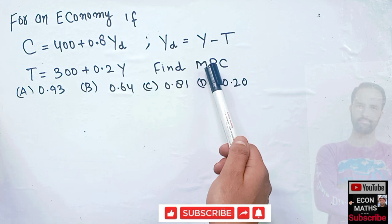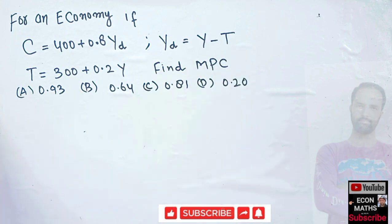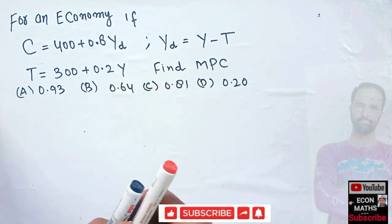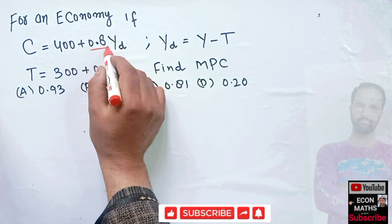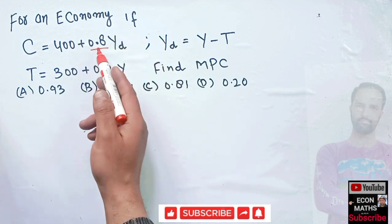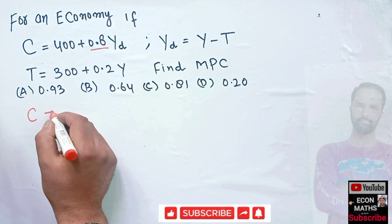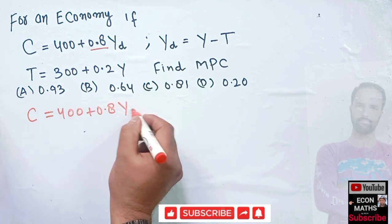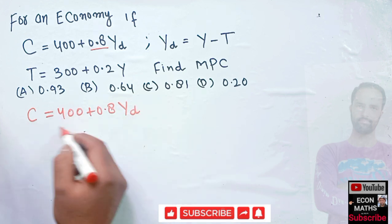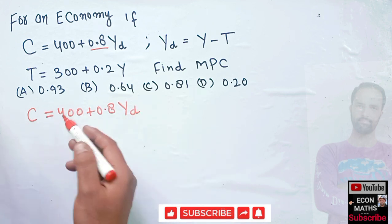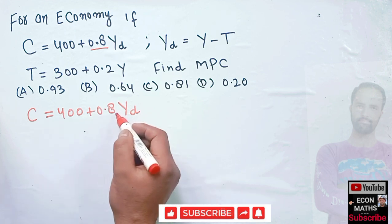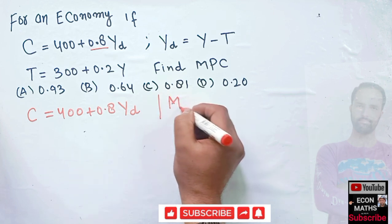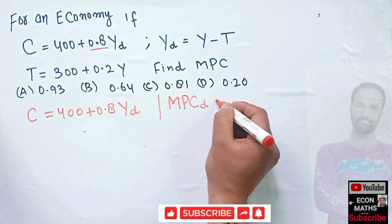We have to find out the marginal propensity to consume. The options are 0.93, 0.64, 0.81, 0.20. So we have C is equal to 400 plus 0.8 Y subscript D, where C is consumption. This 400 is our autonomous consumption — it does not depend upon the level of income. 0.8 is our marginal propensity to consume with respect to disposable income.